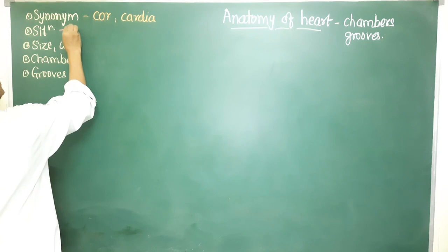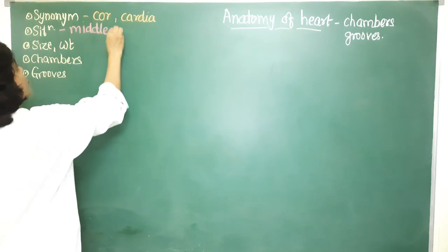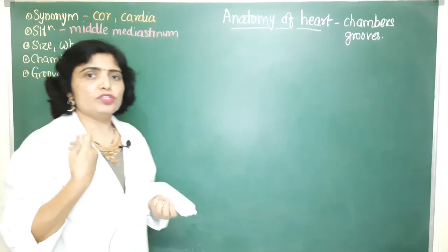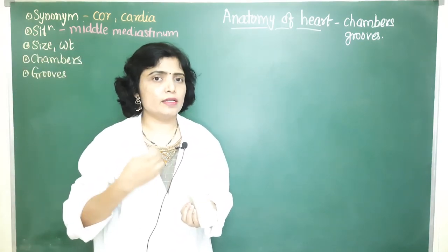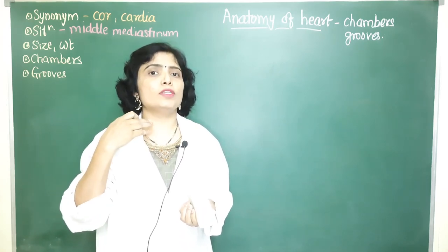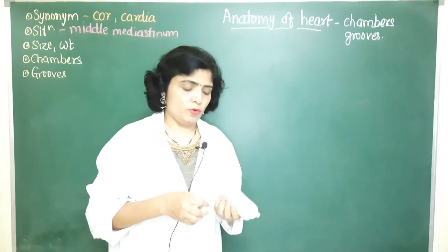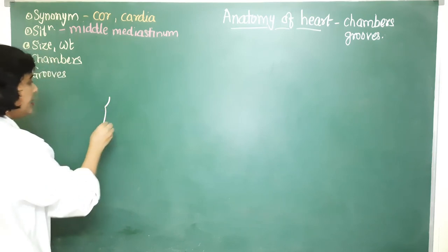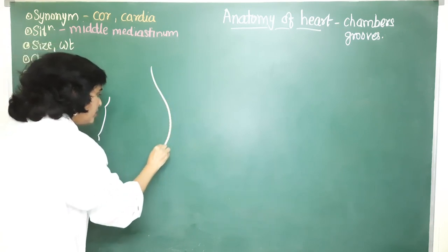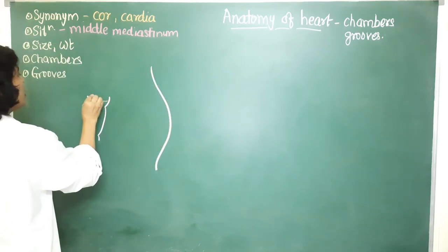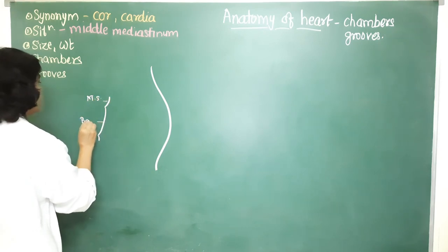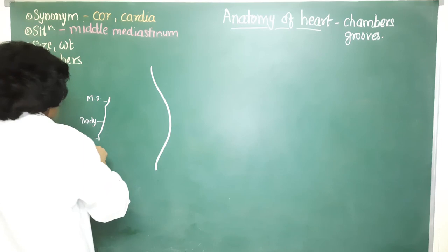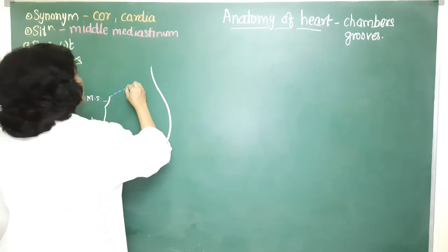The heart is situated in the middle mediastinum. The mediastinum is the median space situated between the two pleural cavities, which extends from the sternum anteriorly to the thoracic vertebrae posteriorly, from the inlet of the thorax above to the diaphragm below. In a sagittal section of the mediastinum you can see the sternum with its parts: the manubrium sterni, body of the sternum, and xiphoid process, along with the outline of the thoracic vertebrae.